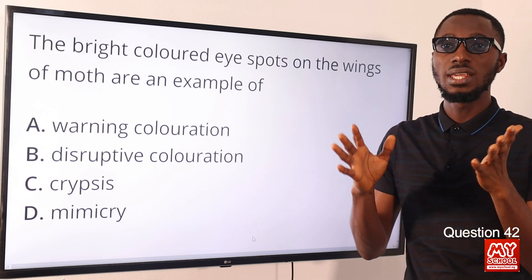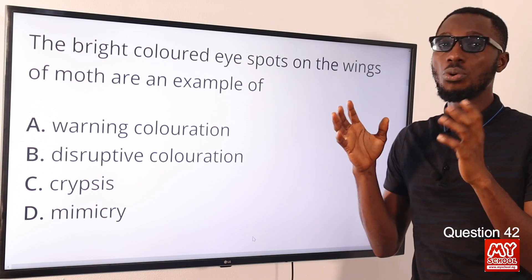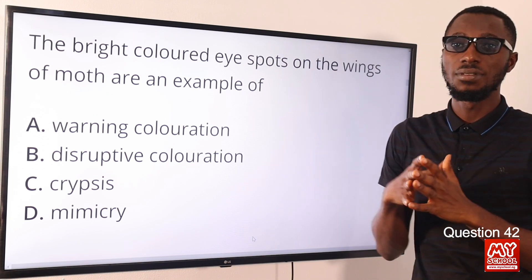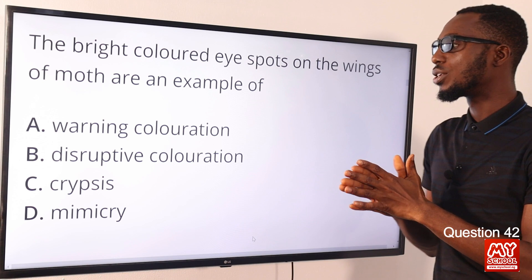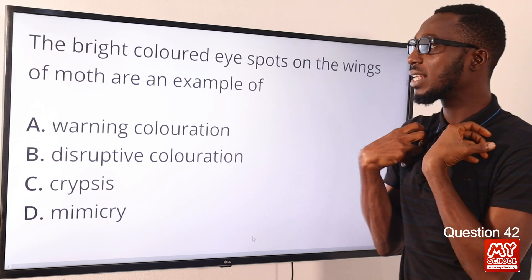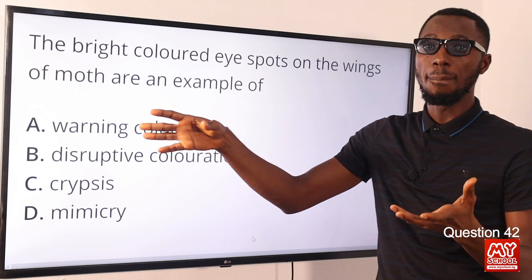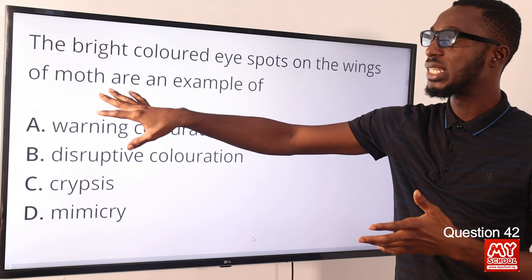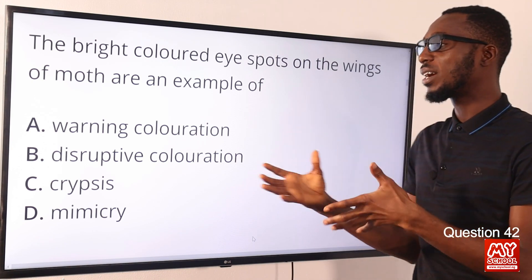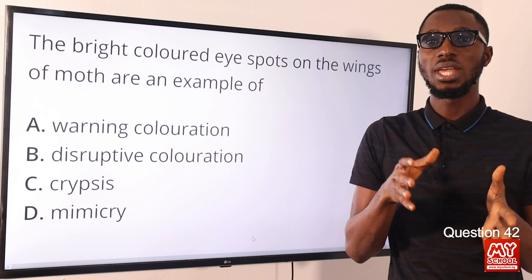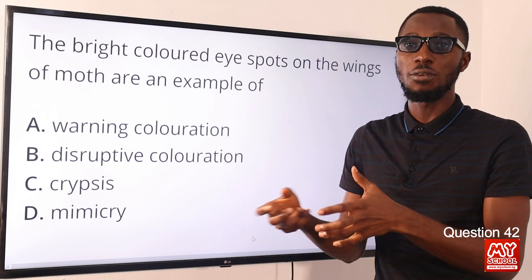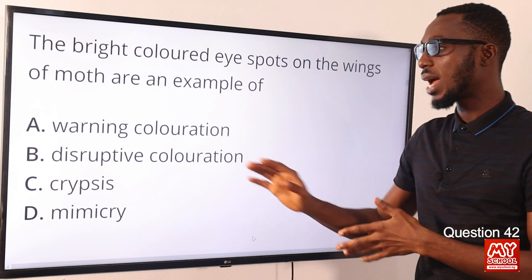The functions of eyespots include giving the predator a sense of concealing the most vulnerable part of the moth, or making the predator perceive the eyes of its own predator. For example, if the predator is a bird, the bird will see these eyespots as the eyes of its own predator and be scared off. Mimicry is when an organism looks like another organism that has more potential to defend itself or to be harmful. The answer here is mimicry.